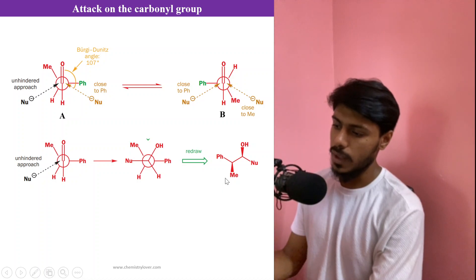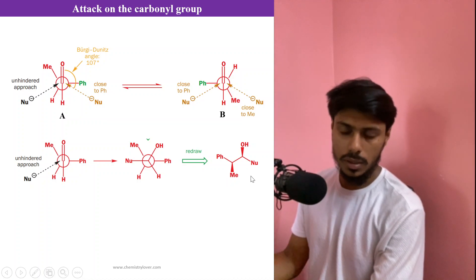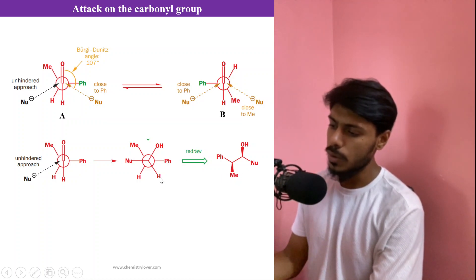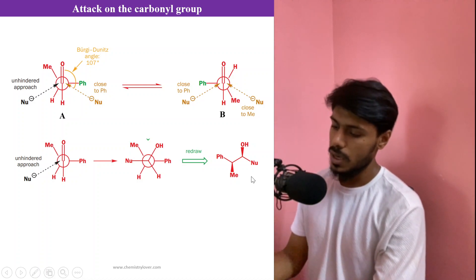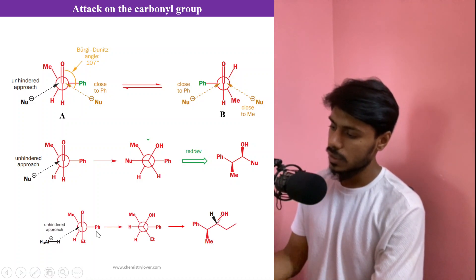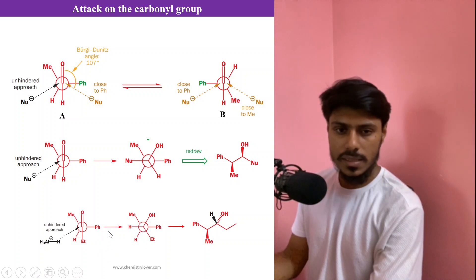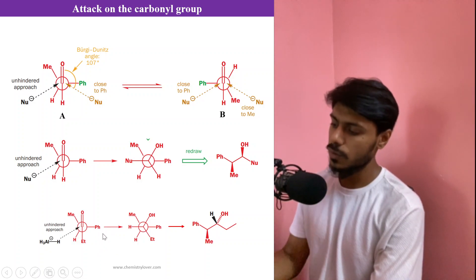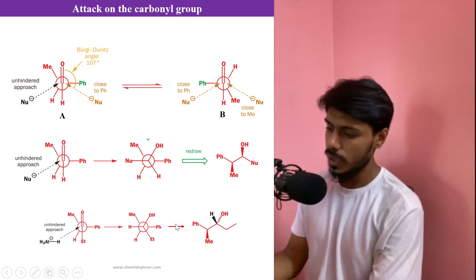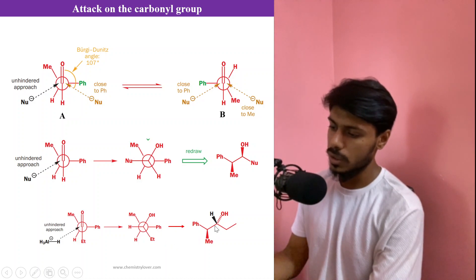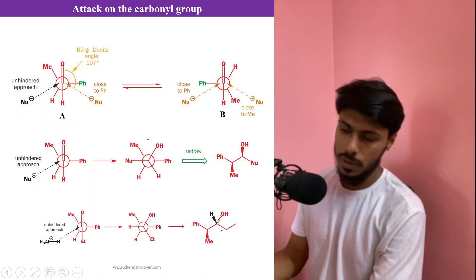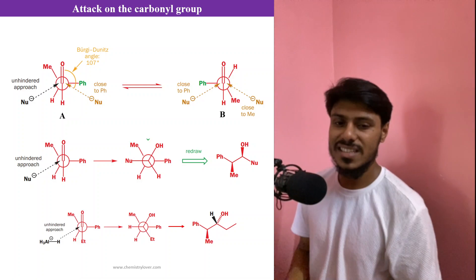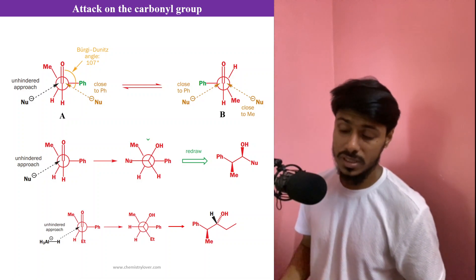In this particular example, we arrange the molecule in its most stable conformation and the nucleophile attacks from the unhindered side where there is only hydrogen. We get the product, which can be converted from a Newman projection formula to a flying-wedge structural formula. The same principle applies to the second example with a different nucleophile — it attacks from the less-hindered side and we get the corresponding product.